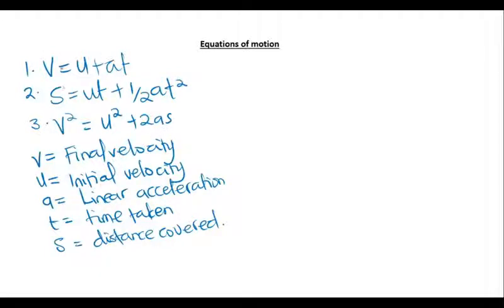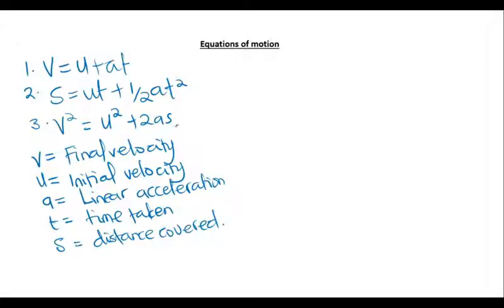So the final velocity equals the sum of the initial velocity and the product of acceleration and time. The distance equals the initial velocity multiplied by time, plus half the product of acceleration and time squared. The velocity squared equals the initial velocity squared plus twice the product of acceleration and distance. With this basic introduction to kinematics and motion, let's look at some examples.